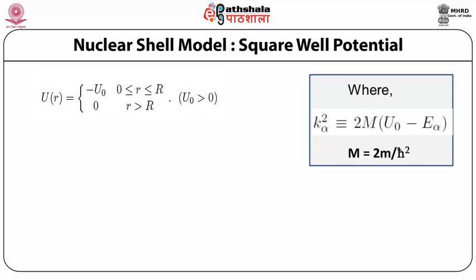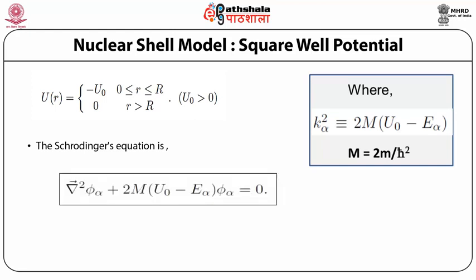Nuclear Shell Model — Square Well Potential. The first developers of the nuclear shell model considered the square well potential. The square well potential gives k_αl² = 2m(U₀ − E_α) where m = 2m/ħ². Since the nucleus is a quantum mechanical system, we apply quantum mechanics. To solve any quantum mechanical problem, we consider the Schrödinger wave equation: ∇²ψ_α + (2m/ħ²)(U₀ − E_α)ψ_α = 0.